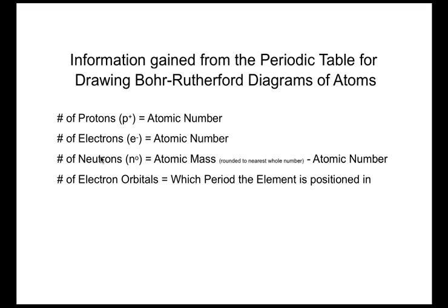We can determine the number of electron orbitals, that is the places where the electrons are located, and actually look at how many electrons are in that outer valence shell.